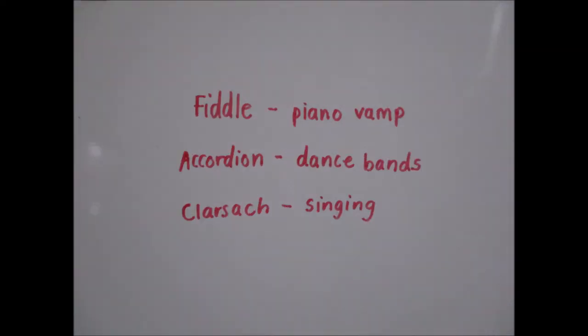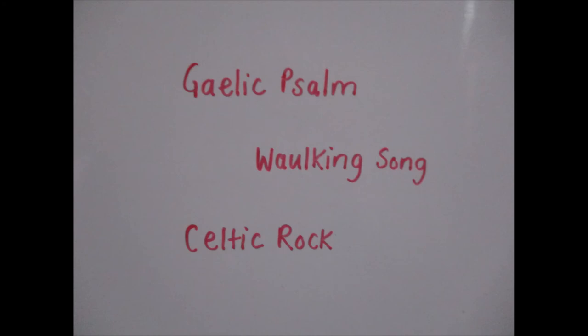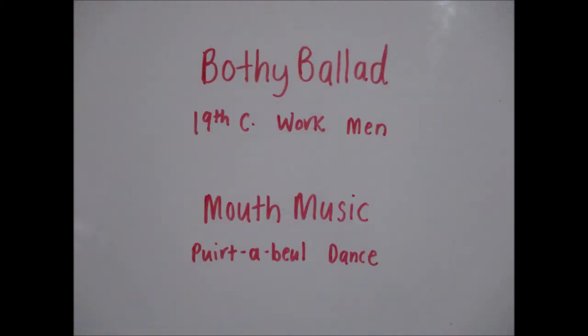The fiddle is usually played along to a piano vamp, the accordion is played in dance bands, and the clarsach is used to accompany singing. There are also Gaelic psalms, which are led by the leader of the church and followed on by everyone else, walking songs which were used in the traditional waulking of wool, sung by women, and Celtic rock, a new fusion genre. Bothy ballads were sung in the 19th century, at work, about work, by working men. There is also mouth music, also known as puirt-a-beul, made up of words that are sung to a tune, specifically for dance.